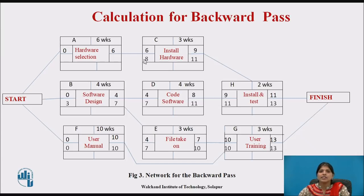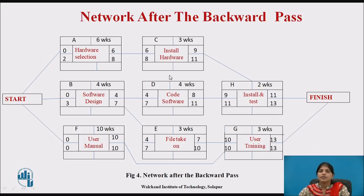A is the precedent of activity C, so we write down 8 as the latest finish for A. Then 8 minus 6 gives 2 as the latest start date of activity A. This completes the network after backward pass, calculating latest start and latest finish dates.